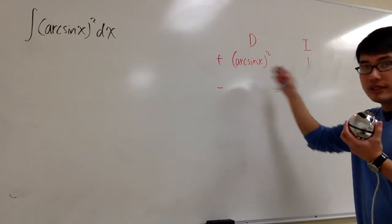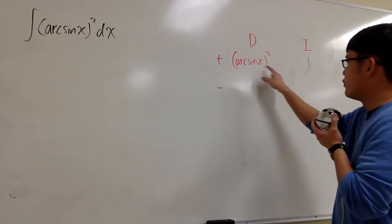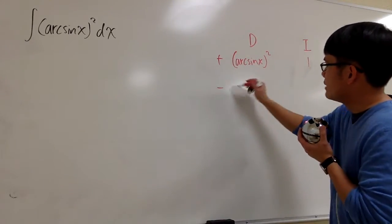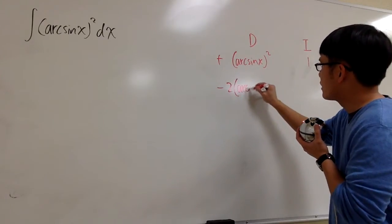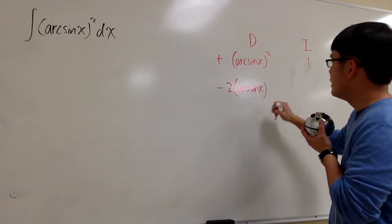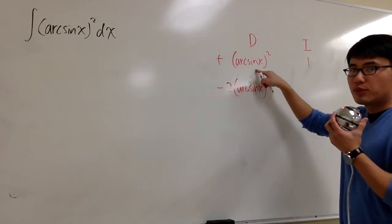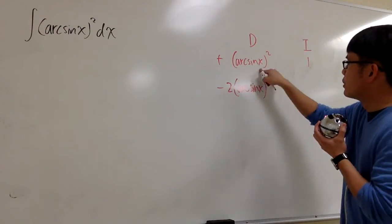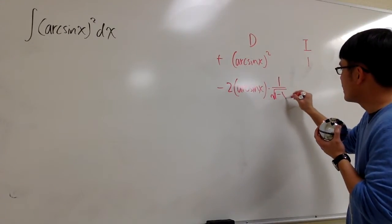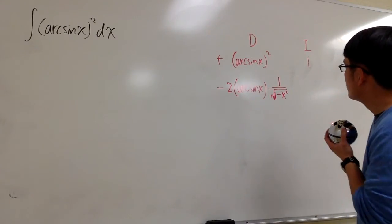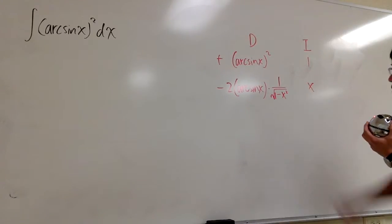Two rows is enough for now. Let's differentiate: bring the 2 to the front, the inside stays as arcsin x, and by the chain rule we multiply by the derivative of the inside, which is 1 over square root of 1 minus x squared. That's done. Now integrate the 1, which gives us x.